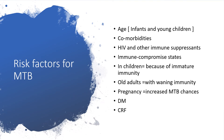What are the possible risk factors for Miliary tuberculosis? Number one: age — infants and young children are most affected. Comorbidities include HIV and other immunosuppressant agents, and immune-compromised states. In children, it may be due to immature immunity, and in older adults, due to waning immunity. Risk is also increased in pregnancy, diabetes mellitus, and chronic renal failure.